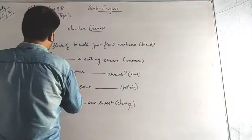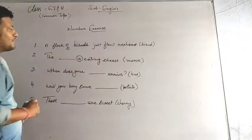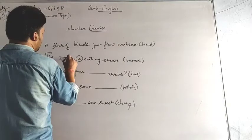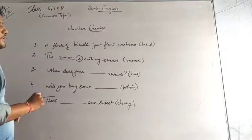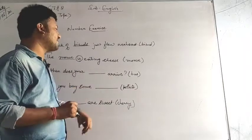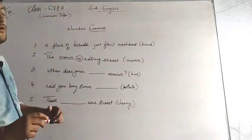Now the another one is the dash is eating cheese. Here I can see 'is' is here. 'Is' I use with the singular ones, so I will write my noun mouse as it is and I am not going to change it. Another one: when does your dash arrives? Bus is my noun and 'does' is here. I know very well 'does' I use with the singular noun, so again I will simply write it into the singular form.